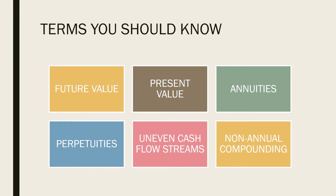Non-annual compounding — the more frequently interest is compounded, the greater the effective yield on our savings. Many banks use non-annual compounding periods such as monthly or daily. In order to make comparisons, we must find the effective annual yield. This tells us how much we are earning on an annual basis.